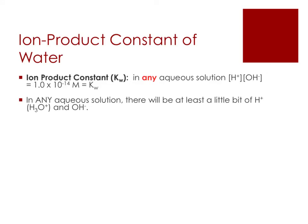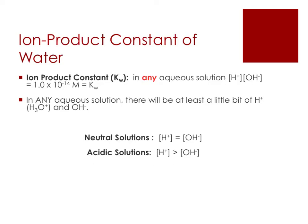The ion product constant for water, Kw, is also the value of [H+] × [OH-] for any aqueous solution. Any aqueous solution will have at least a little H+ (or H3O+) and some OH-. It's the relative amounts of each that determines if the substance is an acid or a base. If [H+] equals [OH-], it's a neutral solution. If [H+] is greater than [OH-], it's an acidic solution. Remember, H+ concentration is the same as H3O+ concentration.